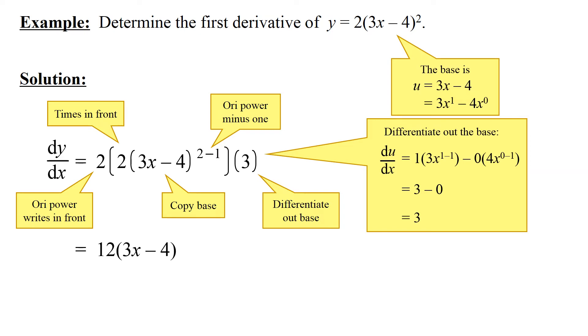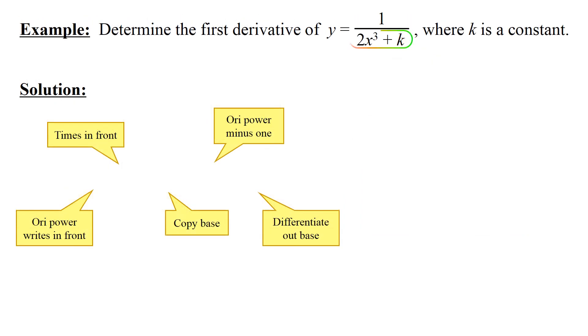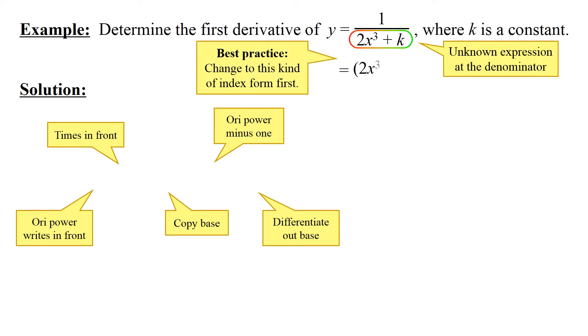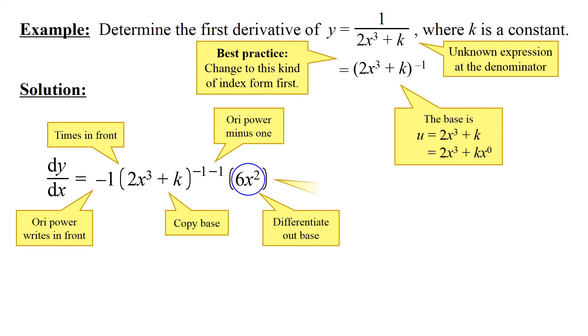Let's see the next example. If you have an unknown expression at the denominator of a fraction, for the best practice, change to this kind of index form first. Here we go. Ori power writes in front, times in front, copy base. Ori power minus one, differentiate out base. Since the base is 2x cubed plus k, where k is a constant, then differentiating out the base with respect to the variable x yields 6x squared.